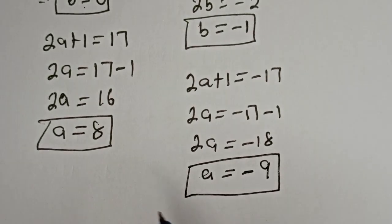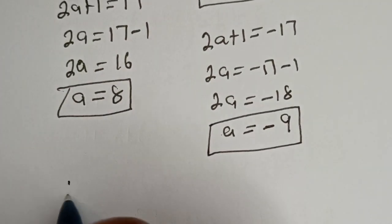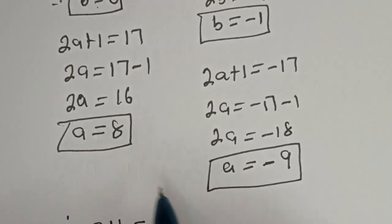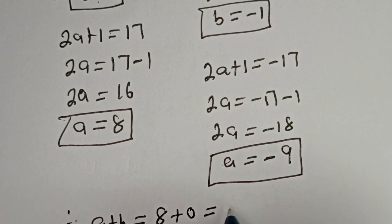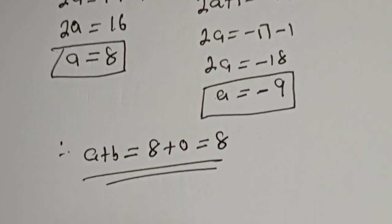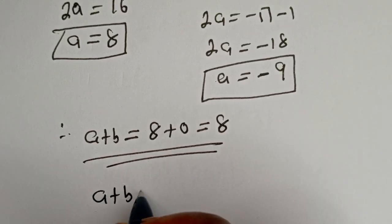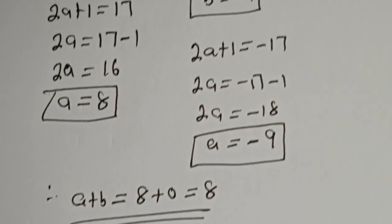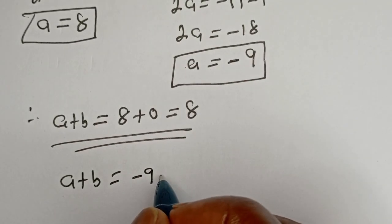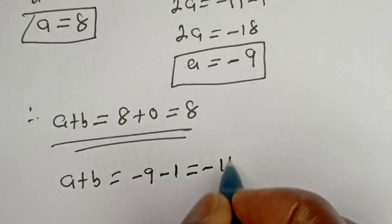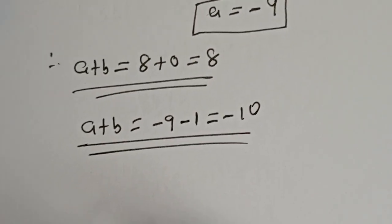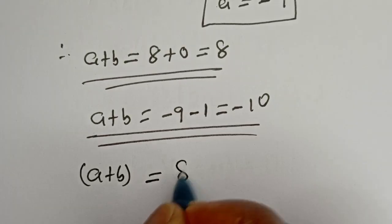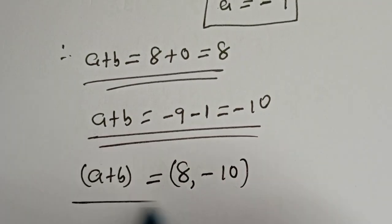We've gotten the values of a and b in both cases. Therefore, a plus b from the first case: b is 0 and a is 8, so 8 plus 0 equals 8. And then a plus b from the second case: a is minus 9 and b is minus 1, so this is equal to minus 10. Therefore, a plus b from both cases is equal to 8 or minus 10, and this is the final answer.